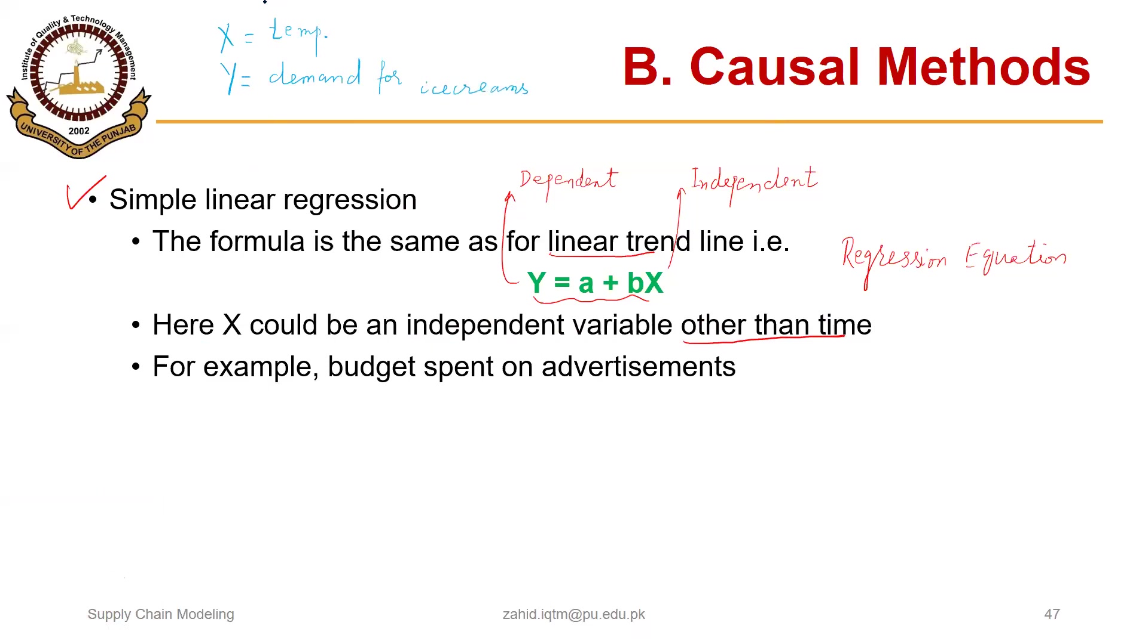In this case, y equals a plus bx. So x will be the temperature and y will be the demand for ice cream. We are predicting the demand for ice cream based on temperature, assuming there is a relationship between these two.